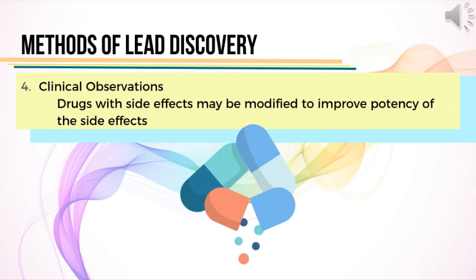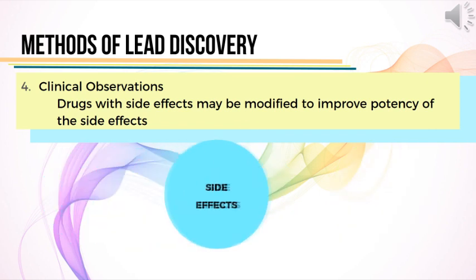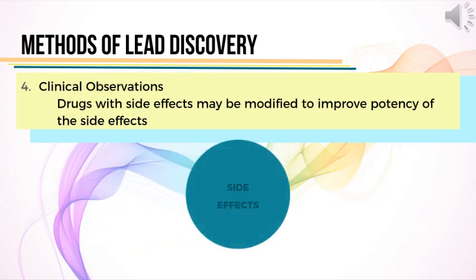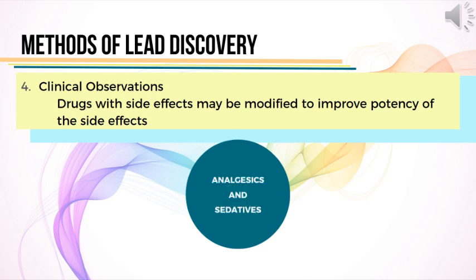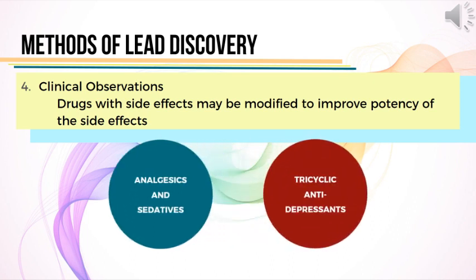Many times, the drug possesses more than one pharmacological activity. The main activity is called the therapeutic effect, while the rest are called side effects. These side effects may be modified and improved in terms of potency so that they may be developed for another useful indication. Many examples of drugs indicated as analgesics and sedatives were later on developed to become tricyclic antidepressants.